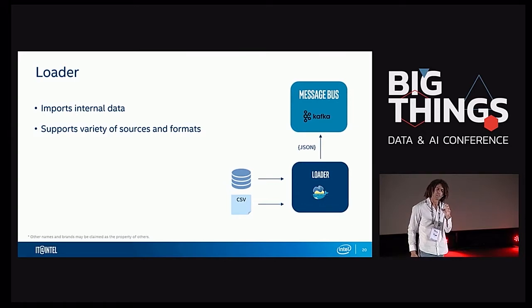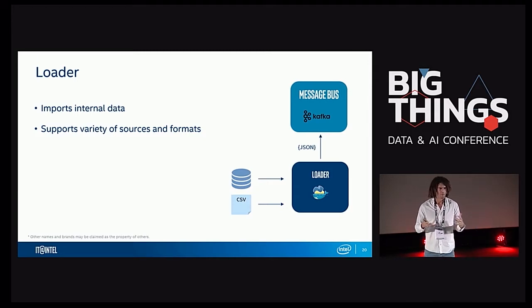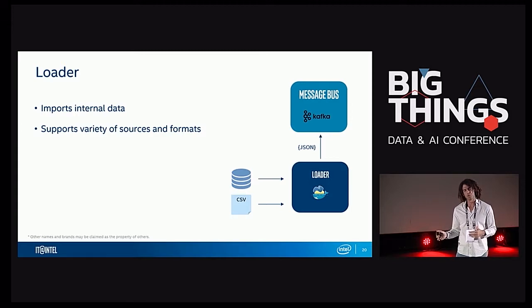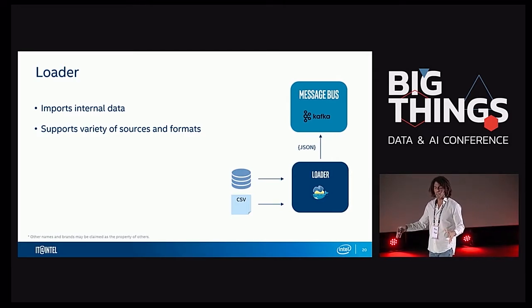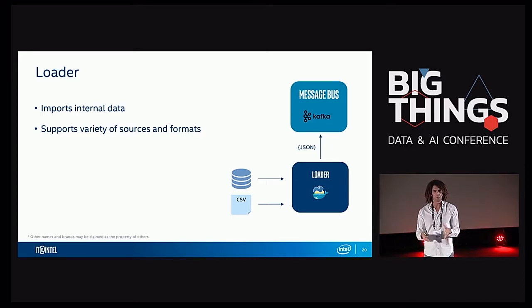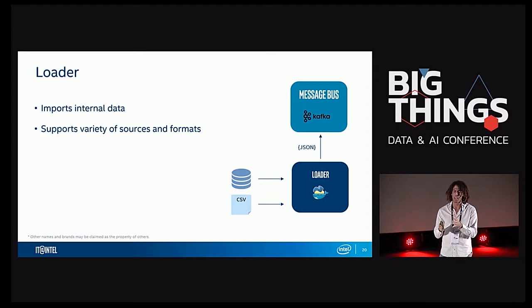The first component is the entry point to the system: the loader. Its entire role is loading data from internal data sources such as CRMs, ERPs, and file systems. It supports a variety of formats and can work with either push or pull. It can periodically pull from a SQL server and CRM systems, or be notified by push from the file system if a new CSV has just arrived. It transforms those records into JSON format and publishes them to our message bus, Kafka. It works continuously to insert data.